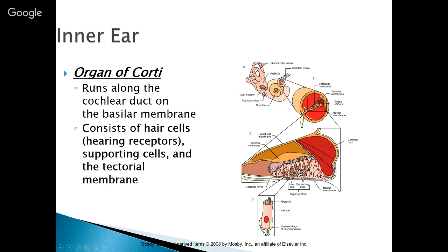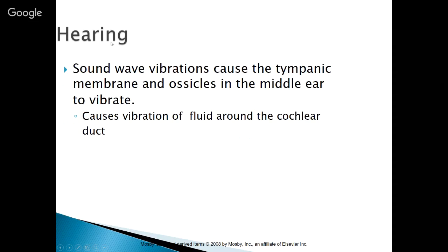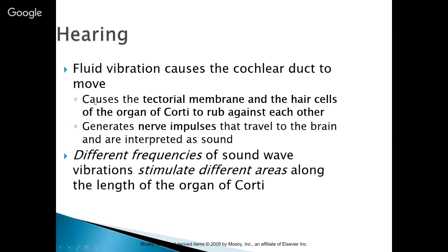The organ of corti runs along the cochlear duct on the basilar membrane and consists of hair cells — the hearing receptors — supporting cells, and the tectorial membrane. Sound wave vibrations cause the tympanic membrane and ossicles to vibrate, which causes vibration of the fluid around the cochlear duct. That fluid vibration causes the cochlear duct to move, which causes the tectorial membrane and the hair cells of the organ of corti to rub against each other, generating a nerve impulse that travels to the brain and is interpreted as sound. Different frequencies of sound wave vibrations stimulate different areas along the length of the organ of corti — that's why it is spiral-shaped.